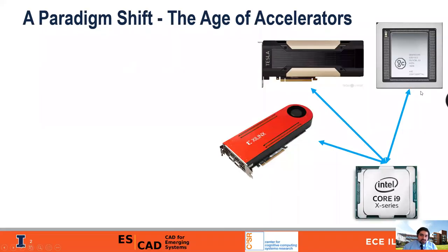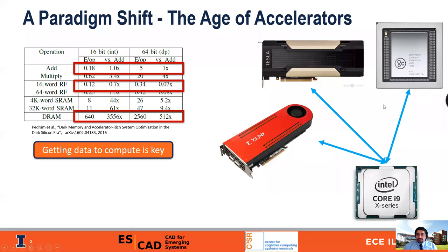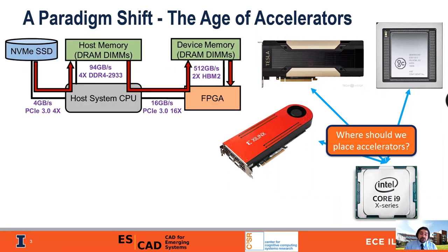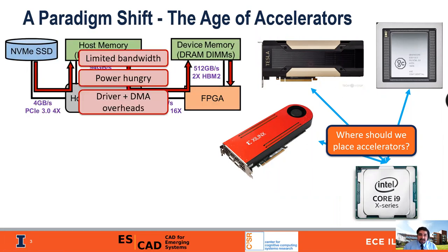In the age of accelerators, the cost of moving data from memory to compute often ends up determining our end-to-end performance and energy efficiency. Therefore, the question to ask is where should we be placing these accelerators? We could place them off-chip and connect them via something like PCIe, but here we're limited by bandwidth, it's a power-hungry solution, and there are driver and DMA overheads.